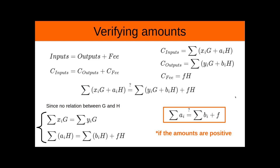But there is a big problem here, because we are verifying this equation without knowing if the terms A and B are positive or not. If we want to make sure that this equation balances, we have to make sure that the amounts are positive. If there were a way to make sure that these amounts are positive, then verifying if the commitments of the inputs are equal to the commitment of the outputs plus the commitment of the fee would give us the same information as verifying directly if the inputs are equal to the outputs plus the fees.